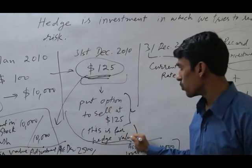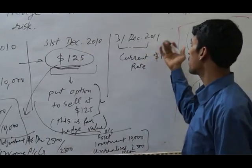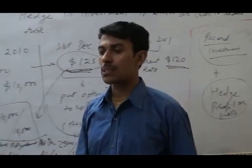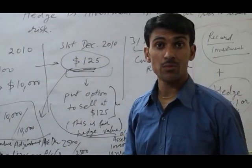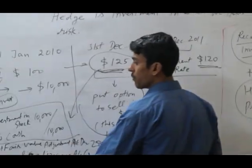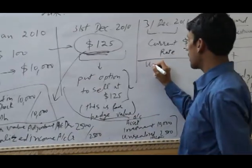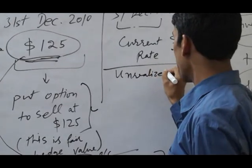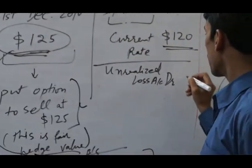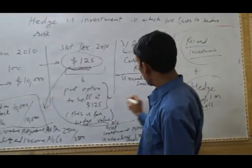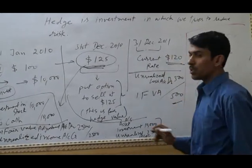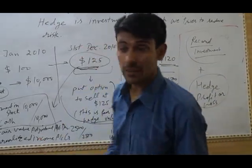This is a fair value hedge. Suppose on 31st December 2011 the current rate becomes $120 — it means the businessman is getting a loss of $5. This is a loss. When the business gets the loss, the entry will be just the opposite: we debit the unrealized loss account with 100 shares × $5 = $500, and credit the investment fair value adjustment for $500.